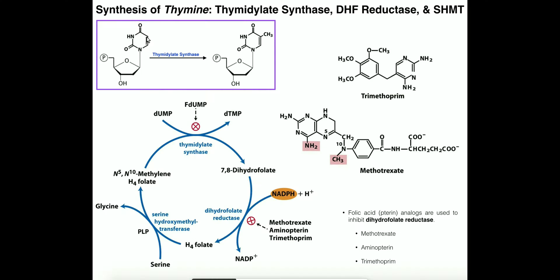We have the monophosphate, the deoxyribose ring, and the key difference: uracil does not have a methyl group at this corner position, whereas thymine does. The reaction of thymidylate synthase adds that methyl group. The methyl donor is not S-adenosylmethionine — it's actually N5-N10-methylene tetrahydrofolate. This form of folate comes from folate metabolism and donates the one carbon that becomes the methyl group. In the process, N5-N10-methylene tetrahydrofolate is converted into 7,8-dihydrofolate, sometimes just referred to as dihydrofolate.